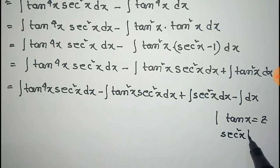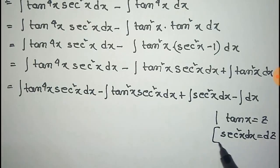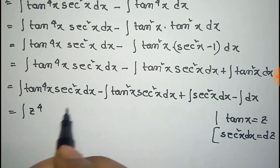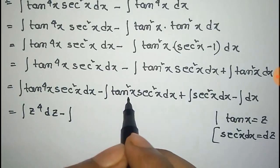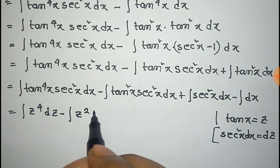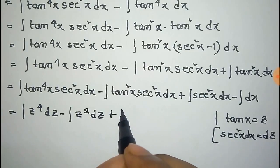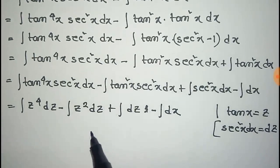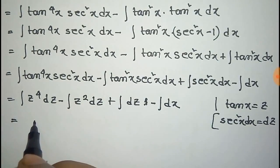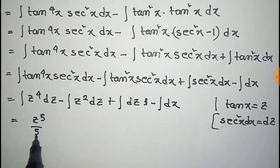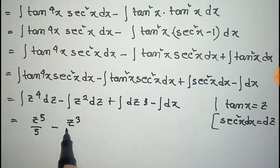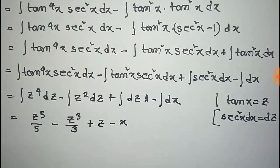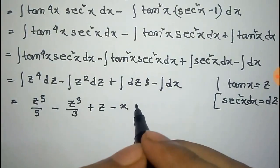Now take tan(x) equal to z, so the derivative of tan(x) is sec²x dx equal to dz. So it will be integration of z to the power 4 dz, minus integration of z² dz, plus dz, minus integration of dx. Now we can integrate this, so it will be z⁵ by 5, minus z³ by 3, plus z, minus x.